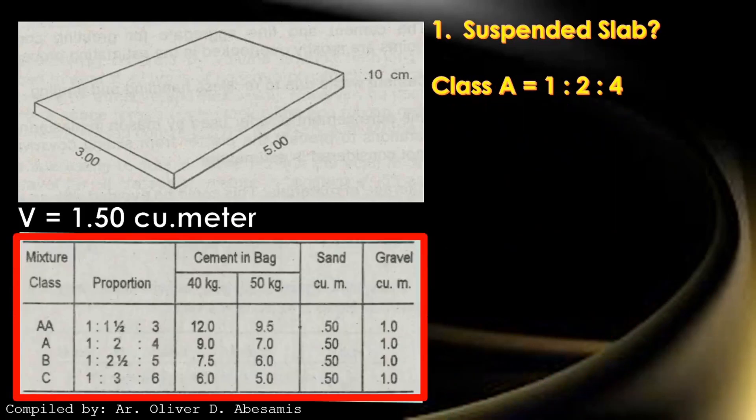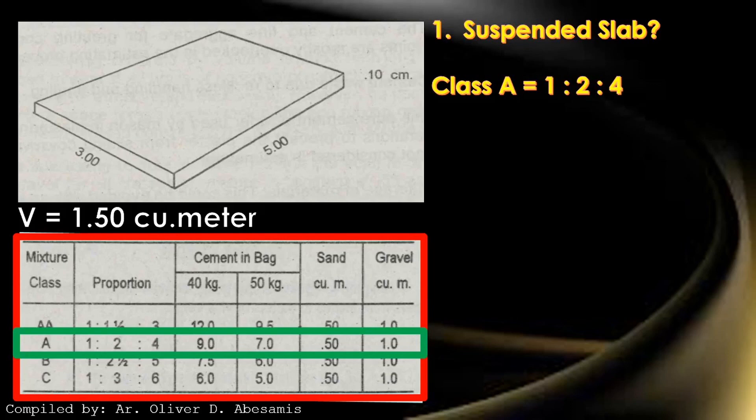This table will show us the concrete mixture, the concrete proportion, and the standard multiplier to calculate the quantity of cement, sand, and gravel. As we have concrete volume of 1.5 cubic meter, we will just multiply it to those numbers. For class A mixture, 9 for cement, 0.5 for sand, and 1 for gravel.